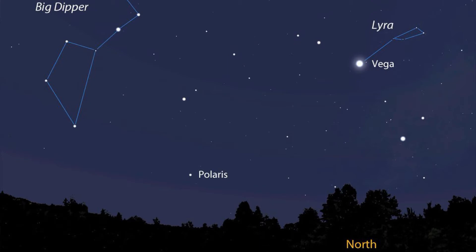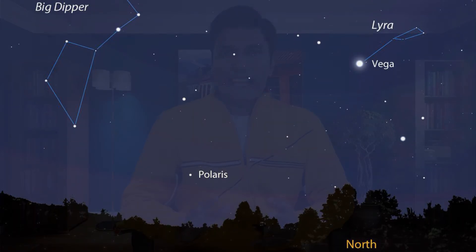However, it was later found that Polaris is a variable star — its brightness changes over time. So later, Vega was defined as the reference of this magnitude system, giving Vega a magnitude of 0.